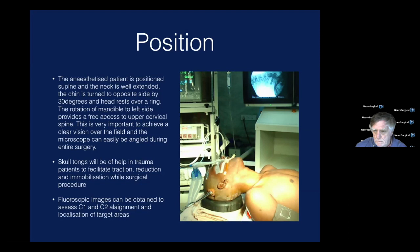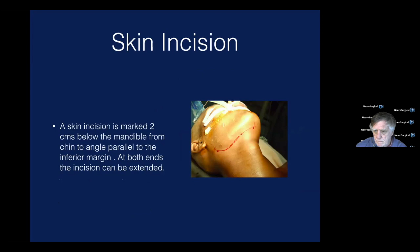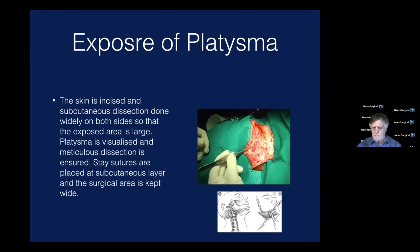The skin incision is marked 1.5 to 2 cm below the mandible, from chin to angle, parallel to the inferior margin. At both ends the incision can be extended. You can see the marking very nicely — this is the classical submandibular marking for the retropharyngeal approach. Once you open the subcutaneous area you may encounter a lot of fat. You have to expose the platysma. The dissection is just like a cadaver dissection — you cannot limit it; the dissection must be very thorough.